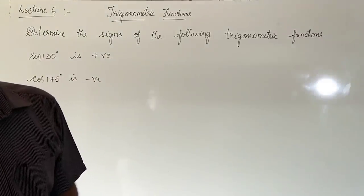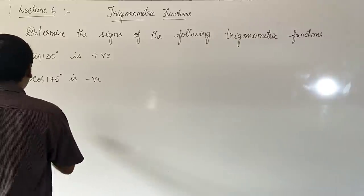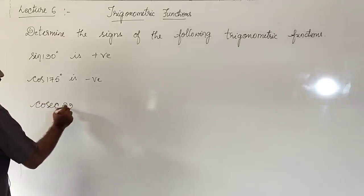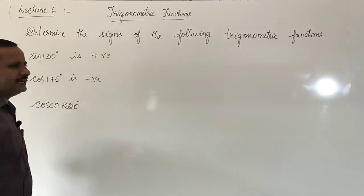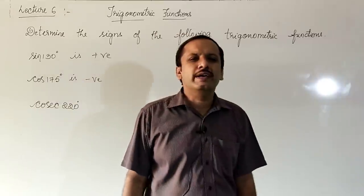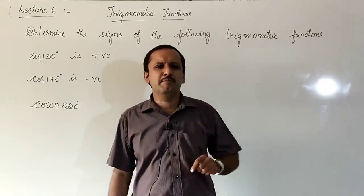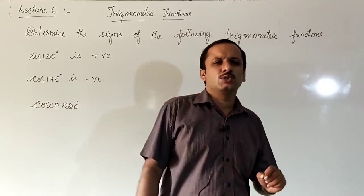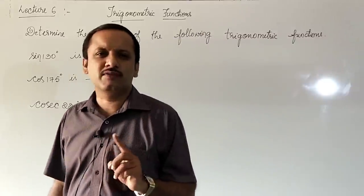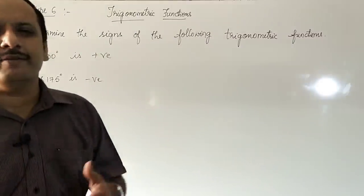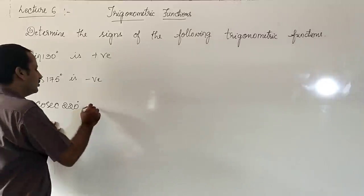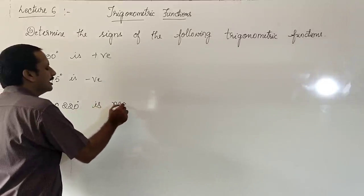Next: cosecant 220 degrees. 220 degrees is greater than 180 degrees but less than 270 degrees, so it lies in the third quadrant. In the third quadrant tan is positive, cot is also positive, and the remaining are negative. We are asked to find cosecant, so cosecant 220 degrees is negative.